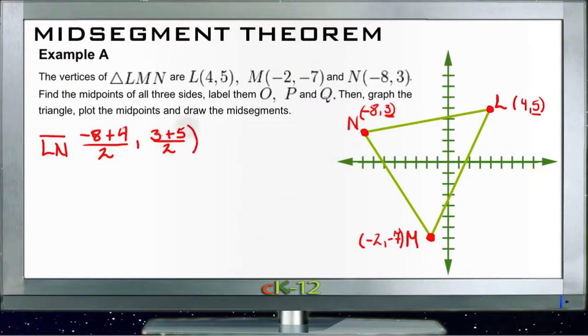And those of you who are kind of quick here are going to note that that's really finding the average of those two points. When you add a set of things together and divide by the members of the set, you find the average. That's really what we're doing, is finding the average x and the average y.